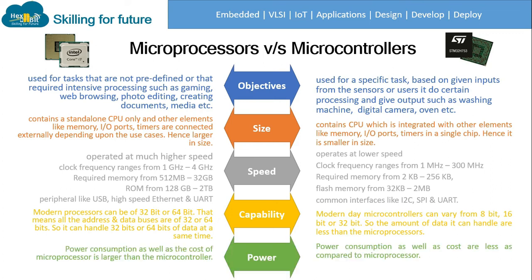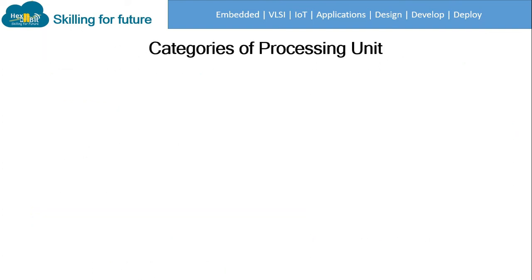Regarding power: since microprocessors are larger, operate at higher speeds, and use 64-bit addressing, their power consumption and cost are greater than those of microcontrollers. Microcontrollers have lower power consumption and lower cost compared to microprocessors.